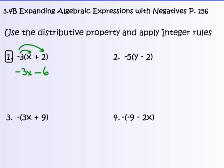Number 2: distributing negative 5 times y gives negative 5y. And negative 5 times negative 2 — always look left of the number and you'll get that sign. Negative 5 times negative 2 gives positive 10. So that's where applying integer rules comes in handy here.